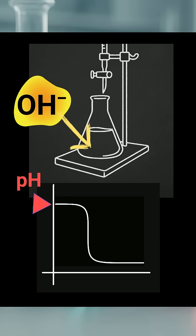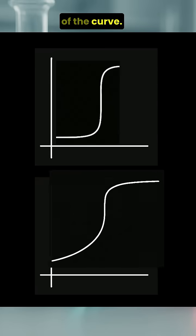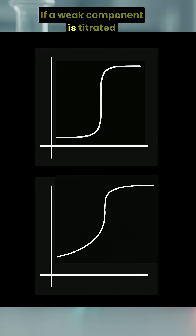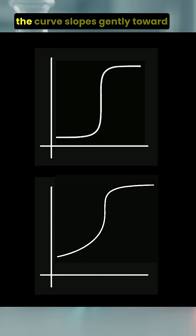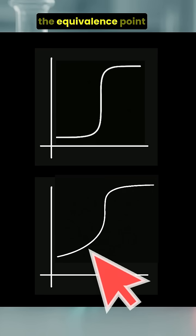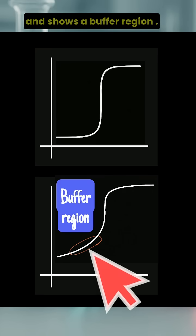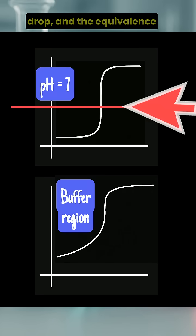Now look at the shape of the curve. If a weak component is titrated with a strong one, the curve slopes gently toward the equivalence point and shows a buffer region. But if the titration involves two strong components, you'll see a sharp rise or drop, and the equivalence point will be at pH 7.